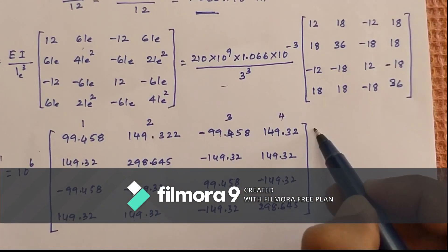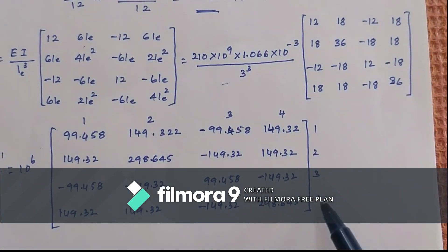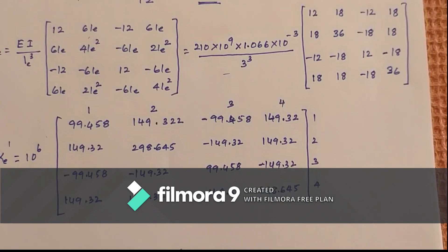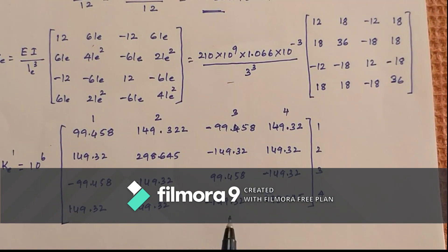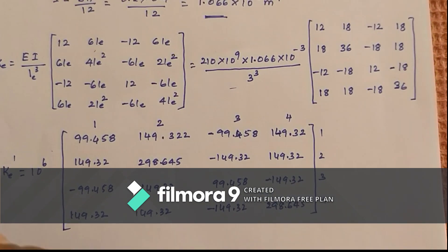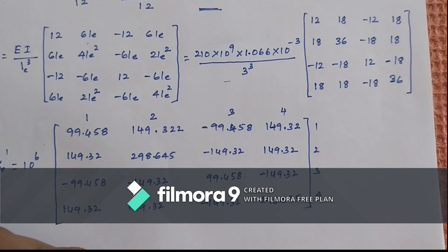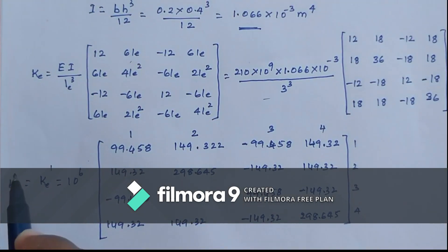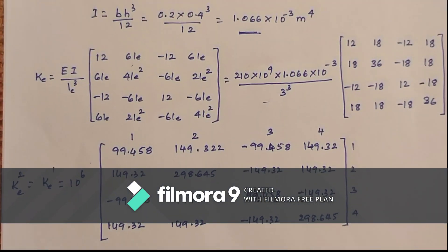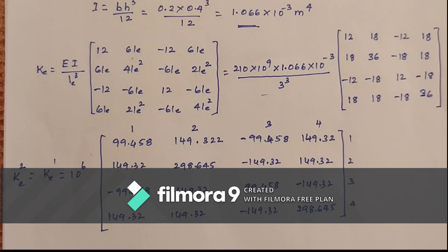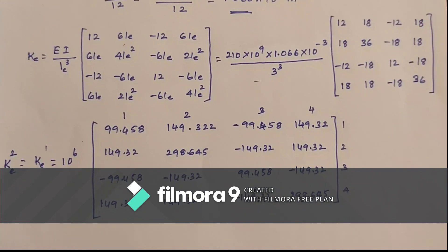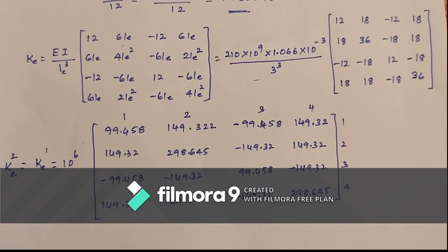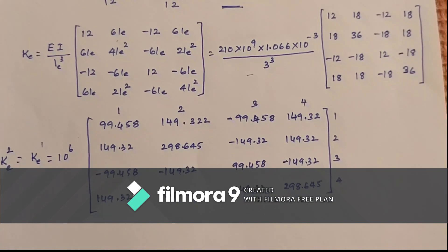Since element properties for element 1 and element 2 are the same, the element stiffness matrix for element 2 is also the same. With this, we can write the global stiffness matrix.